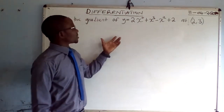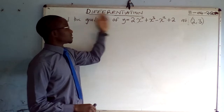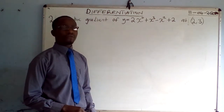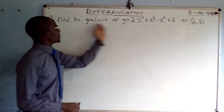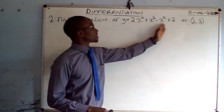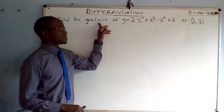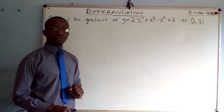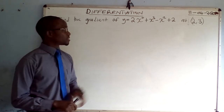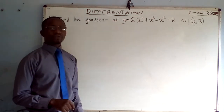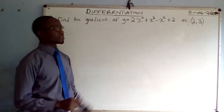The question here is coming from a topic called differentiation, which is a subtopic of calculus besides integration. We need to find the gradient of y at the point (2, 3). So first of all, we find the formula for the gradient — we find the gradient function using differentiation.